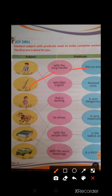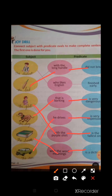Second: 'The bat with the long handle did not break.' Next: 'The girl with the purple shirt is the tallest one.' 'The dog that is barking is very dangerous.' 'The book with the words meaning is a dictionary.' And the last: 'The car he drives is very expensive.'